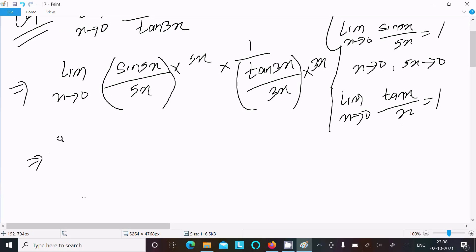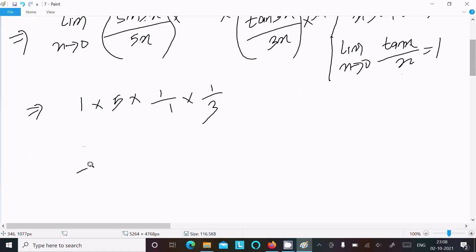Now this returns 1, this is 5x, and there's one important thing: this x cancels with this x. So this is 5, and 1 divided by 1 divided by 3, after multiplying you get 5/3. This is the answer of this limit.